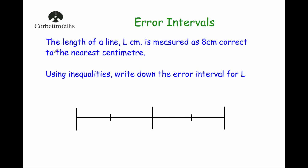Our first question: the length of a line L is measured as 8 centimetres, corrected to the nearest centimetre. Corrected to the nearest centimetre means it's been rounded to the nearest centimetre. Using inequalities, write down the error interval for L. We're going to consider the possible lengths that this line could have taken before being rounded to be 8 centimetres. I'm going to write 7, 8, and 9, with the midpoints 7.5 and 8.5, and consider some values which would round to 8.